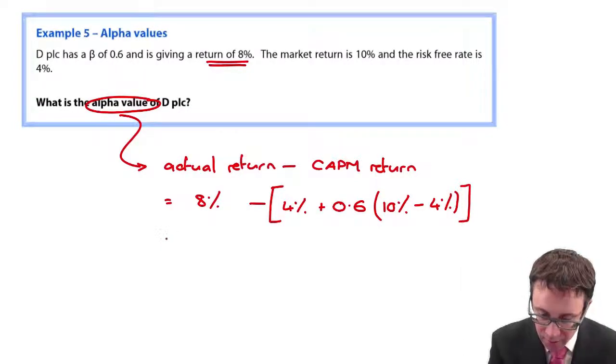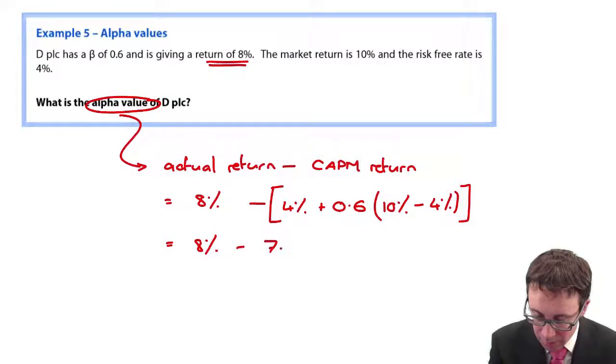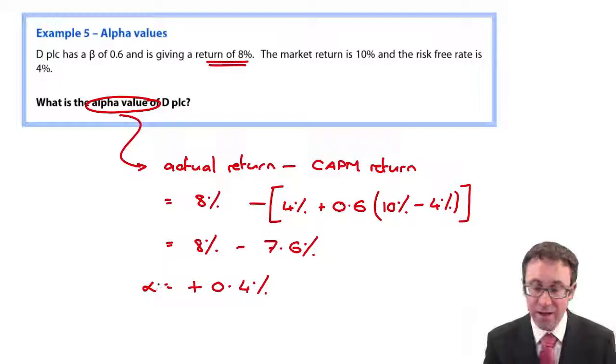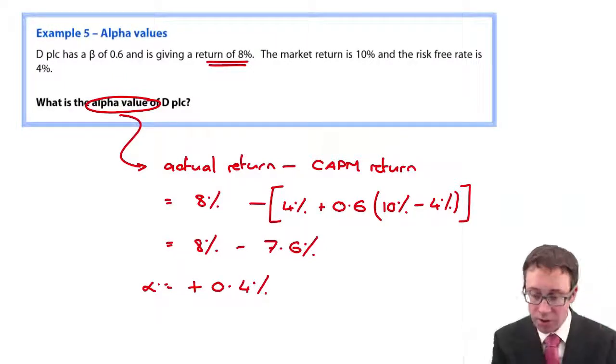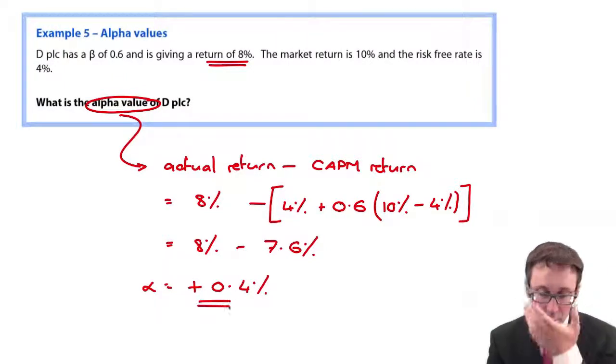So what we've got there is 8 percent less 7.6. So the alpha value is positive 0.4.